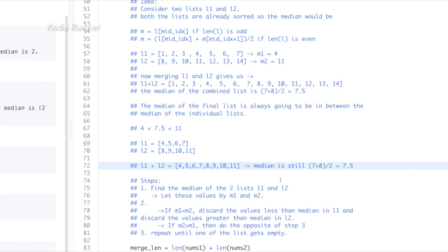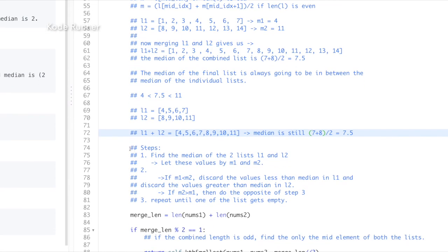I hope the explanation is clear to you. Let me take you through it one more time through the steps that we are going to follow here. Number 1. We find the median of the two lists l1 and l2. Let these be m1 and m2. Number 2.